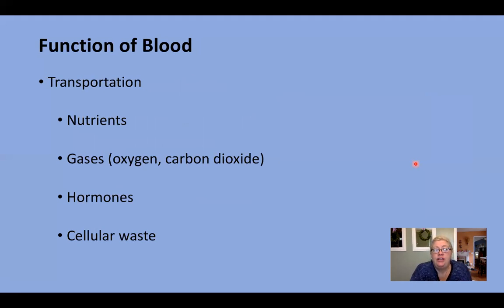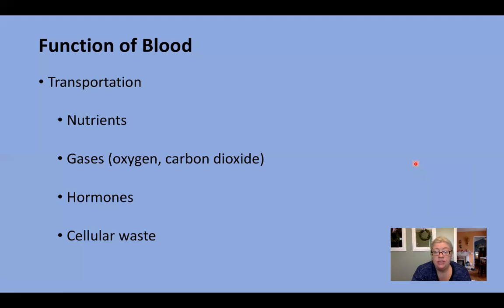Blood has lots of different functions. The first function people think of is transport. It picks up nutrients from our intestines as we digest food and distributes those nutrients to all the cells of the body. It also transports gases: oxygen from the lungs to body tissues, and carbon dioxide from the body tissues back to the lungs. Blood also transports hormones, and picks up cellular waste from the interstitial tissues and transports it to the kidneys for filtration.